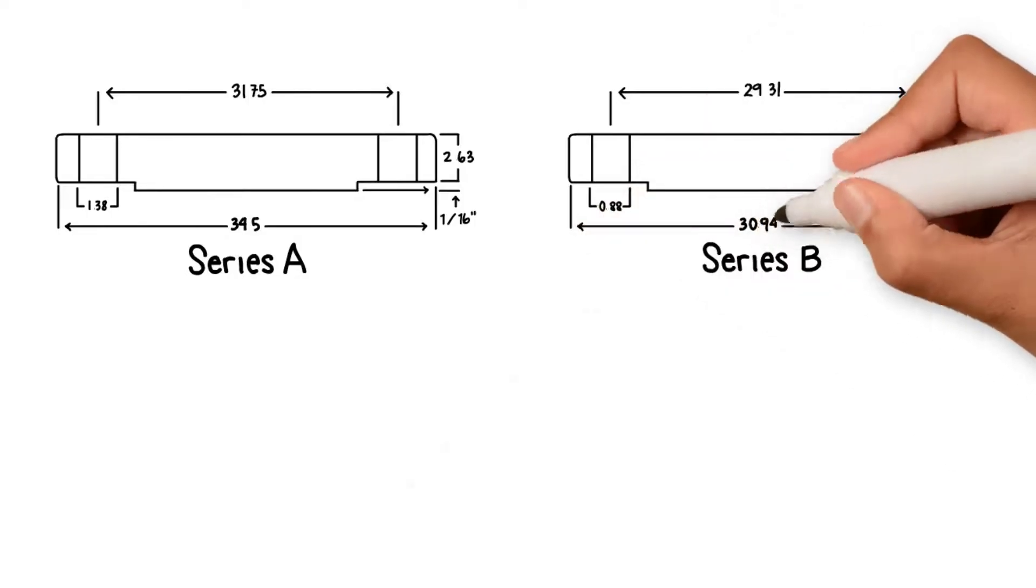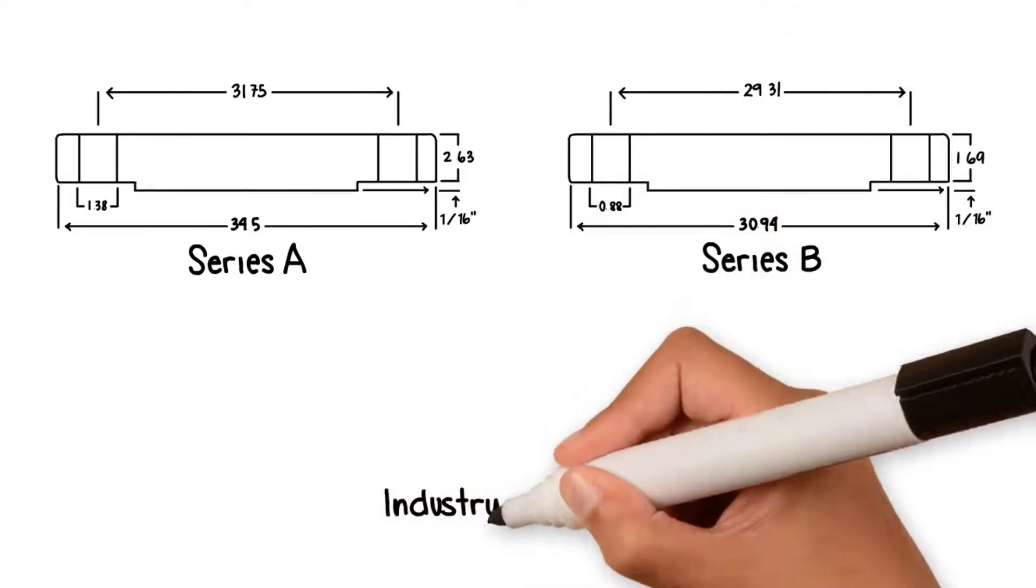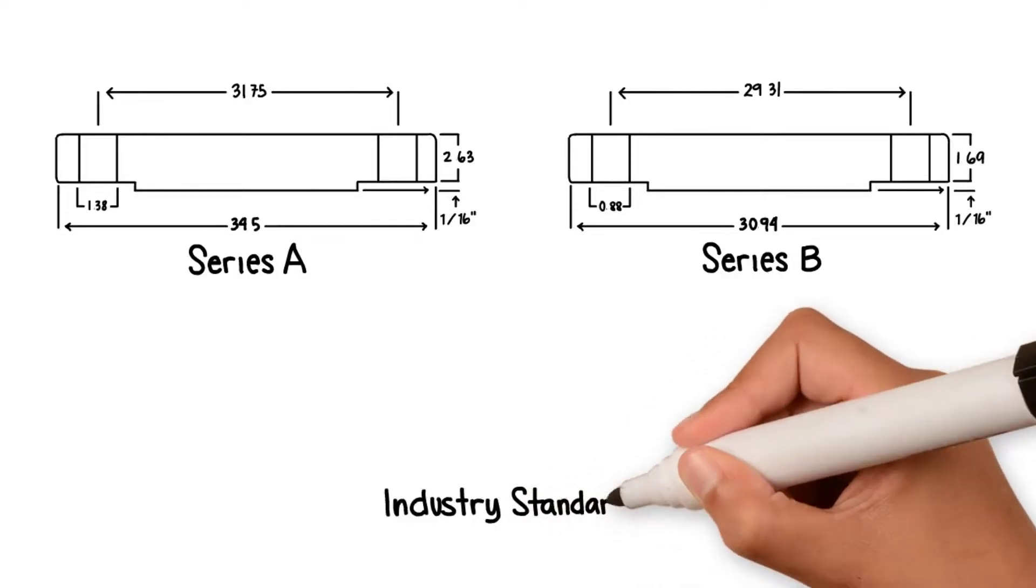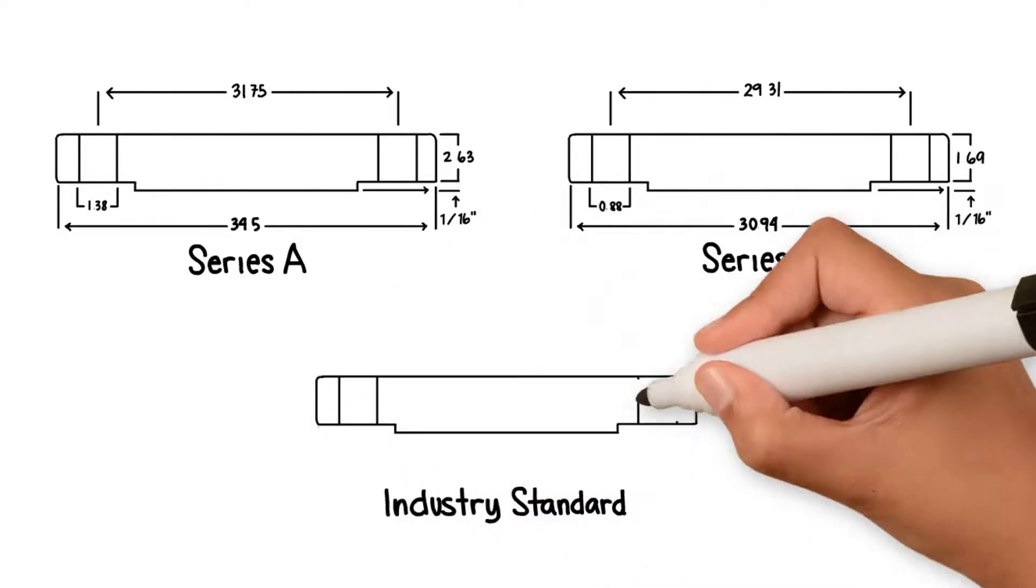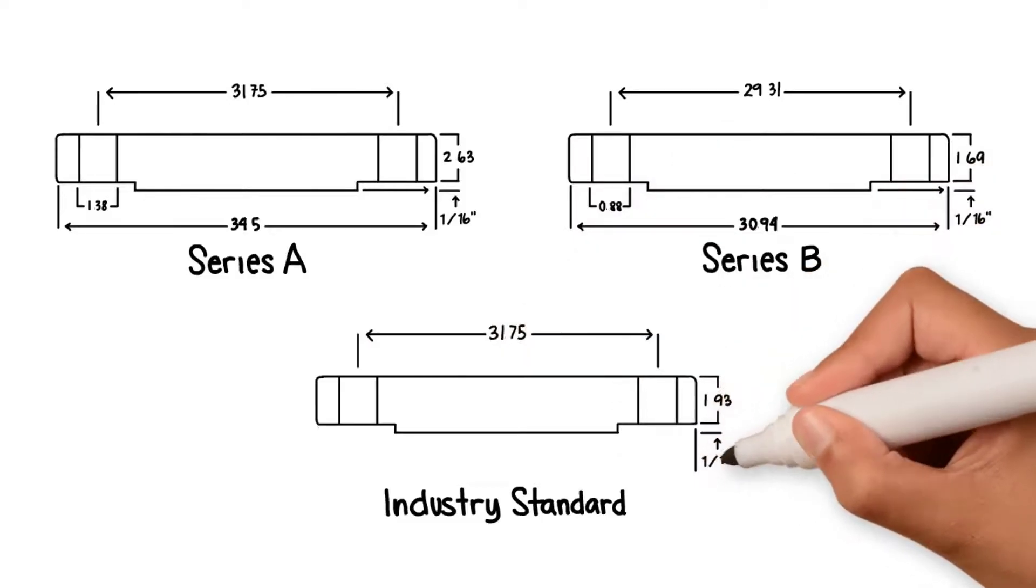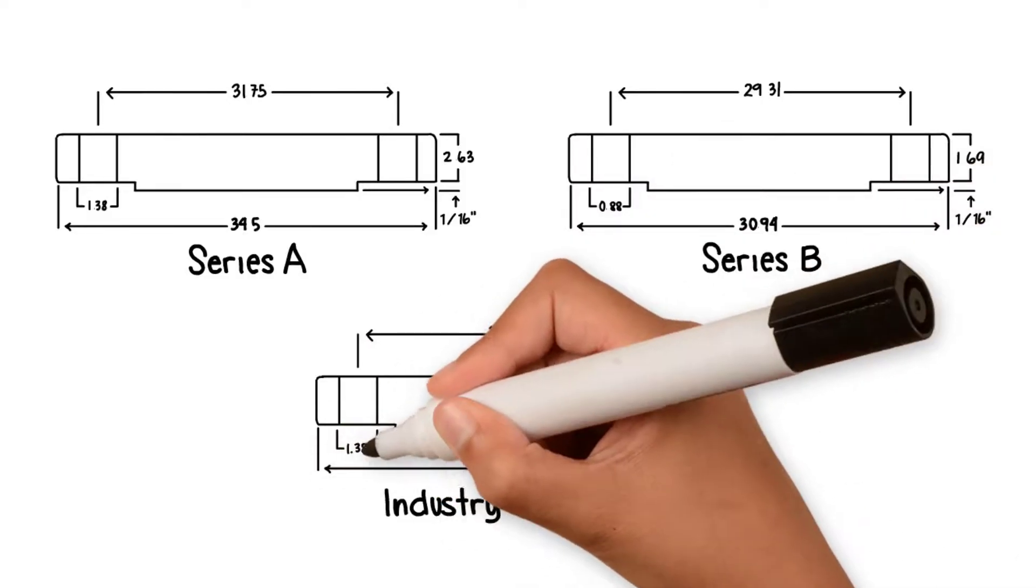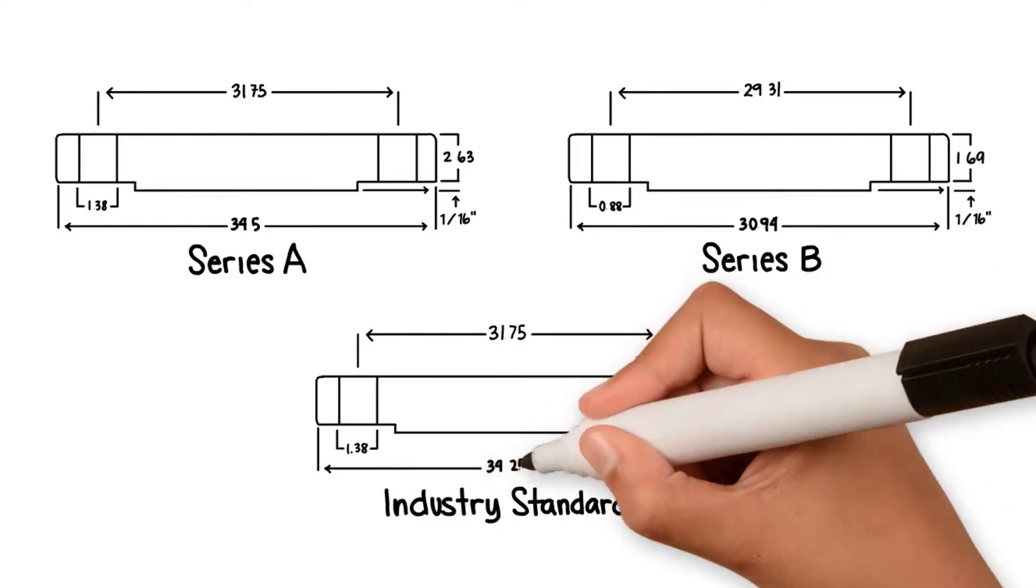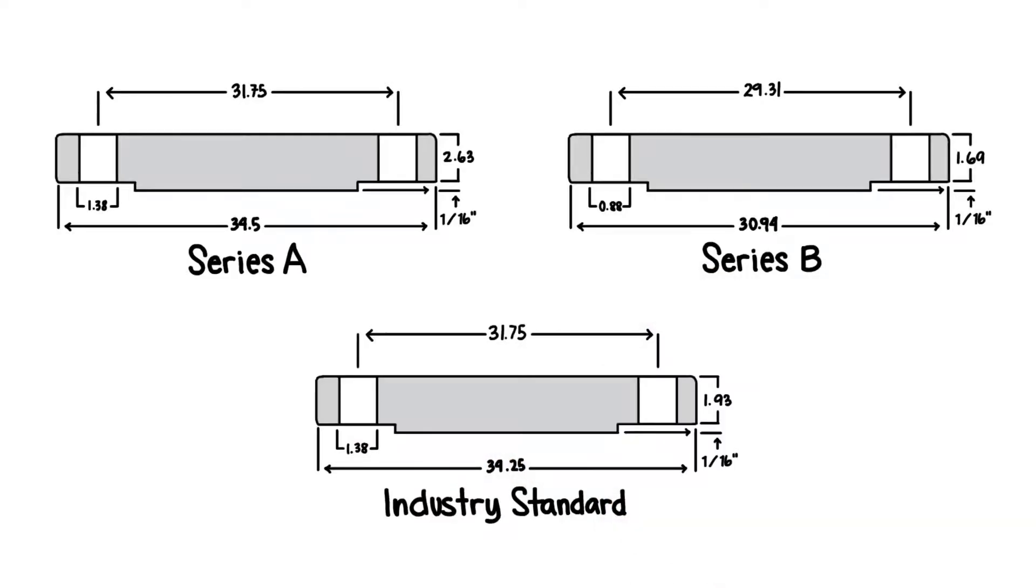Take the same flange in Series B. The flange OD is 30.94 inches, thickness is 1.69 inches, bolt circle is 29.31 inches, bolt hole diameter is 0.88 inches, and the number of bolts are 36.